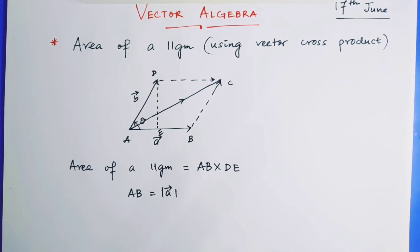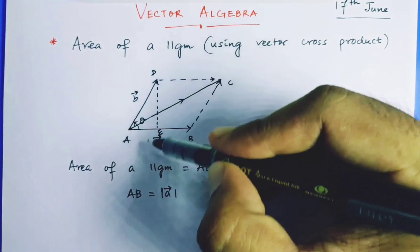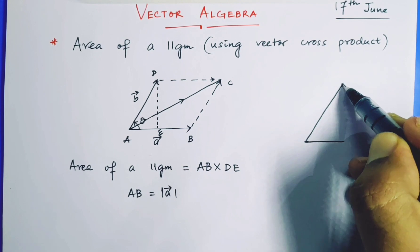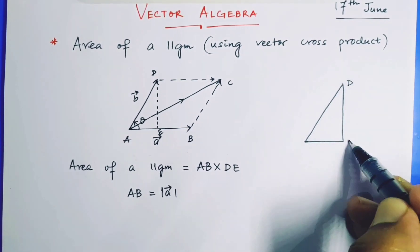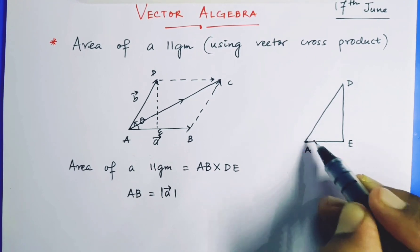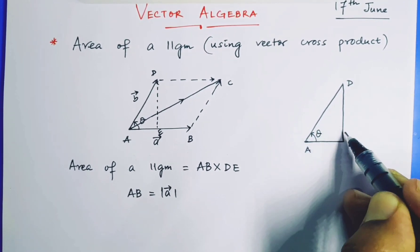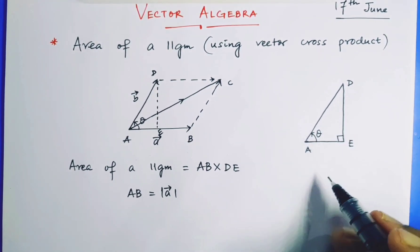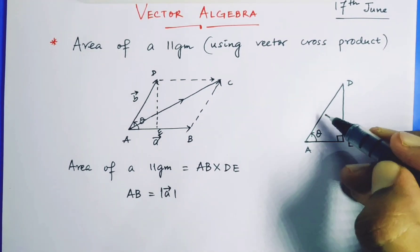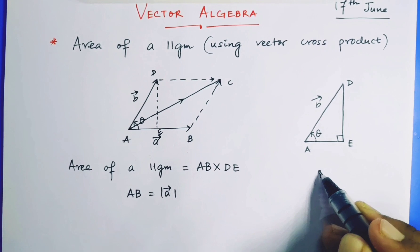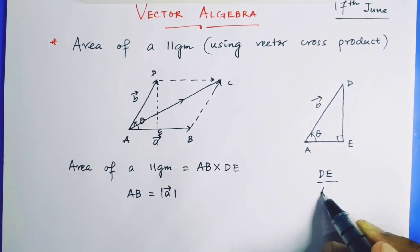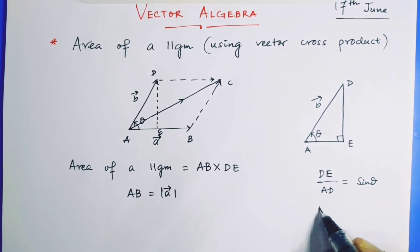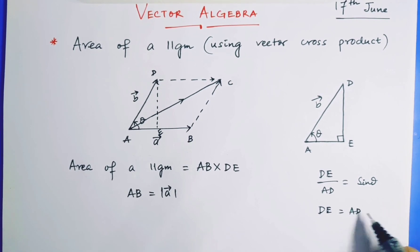Now tell me, what is DE? Now what I see, if I draw it this side like this. So this is D, this is E, this is A, this one is theta. And since we draw a perpendicular, this one is 90 degrees. Now from this triangle, we have to get DE, and this is B vector. Can I say DE divided by AD is equal to sine theta? Therefore DE is equal to AD sine theta.